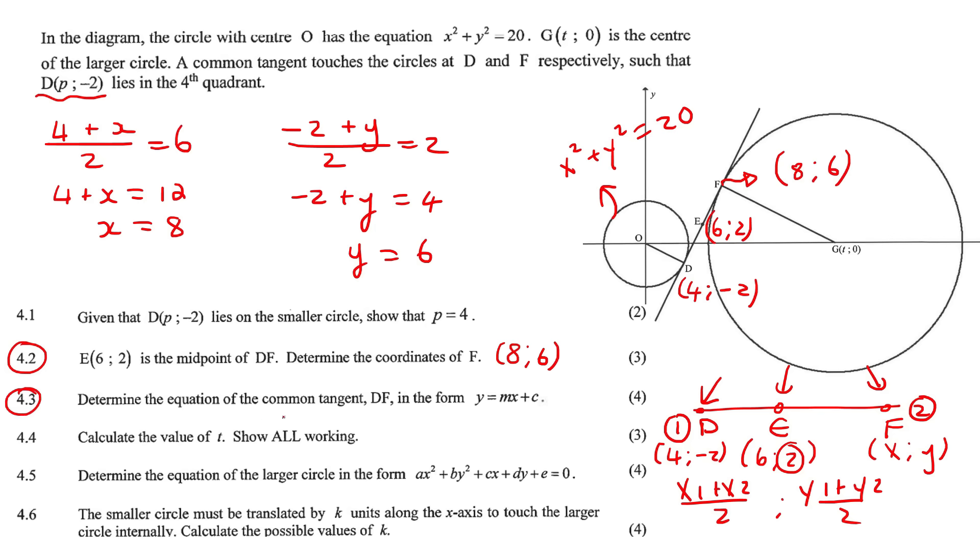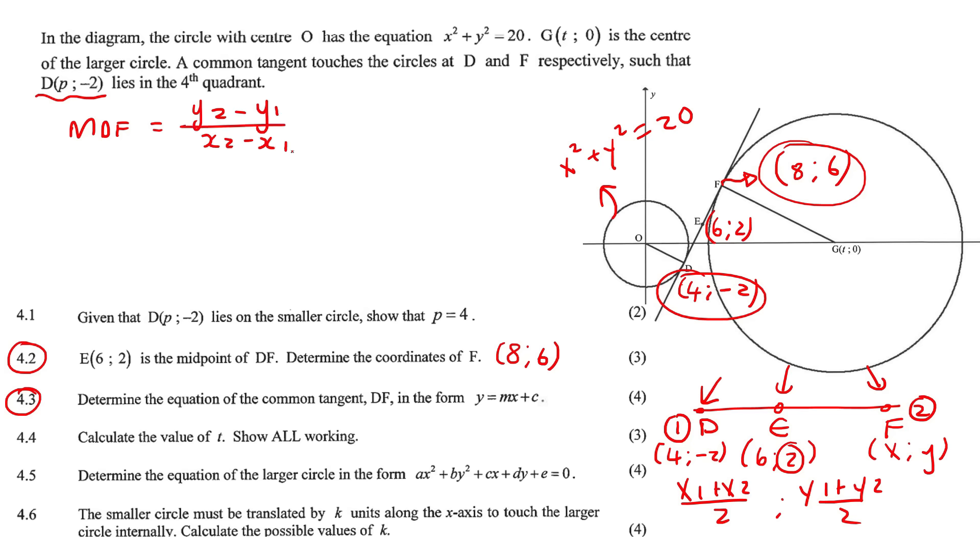This question says, determine the equation of the tangent DF. Okay, that's an easy one. Hey guys, I don't know why that's worth 4 marks, because we have the coordinates. Well, I guess we have to go get the gradient and all of that. But it's not difficult. So we can go work out the gradient of DF. Gradient formula is y2 take away y1 over x2 take away x1.